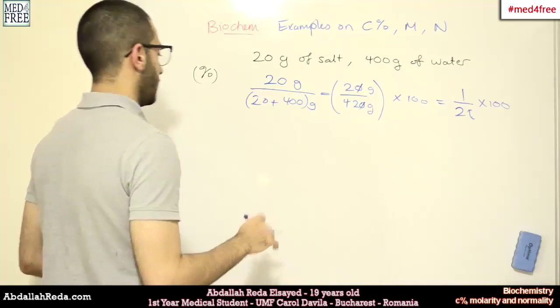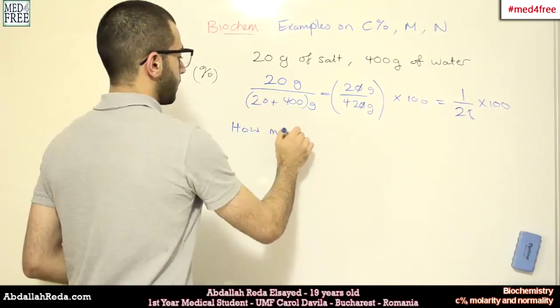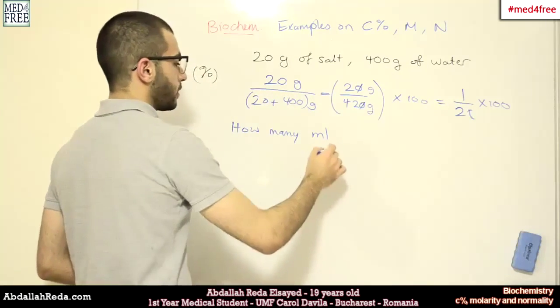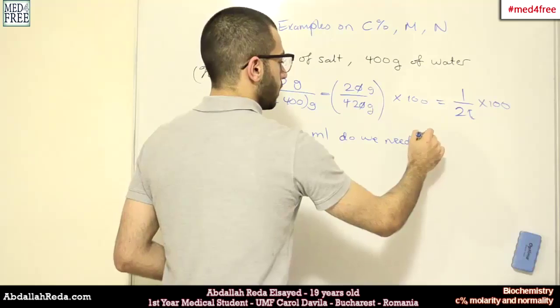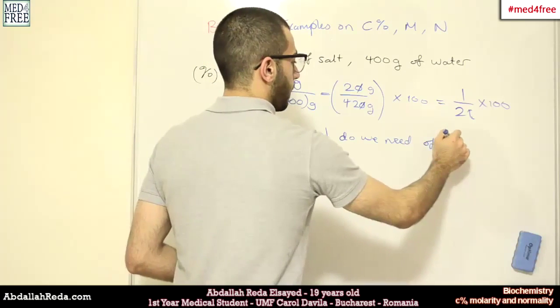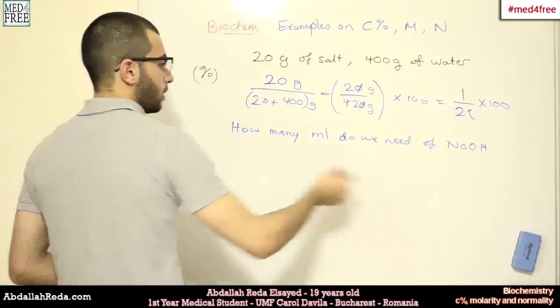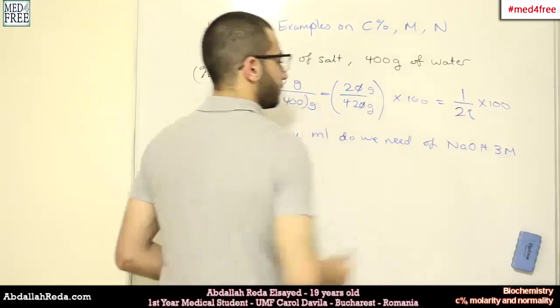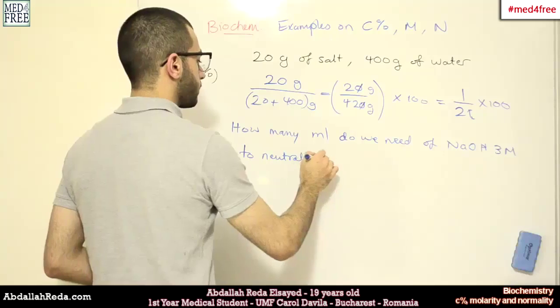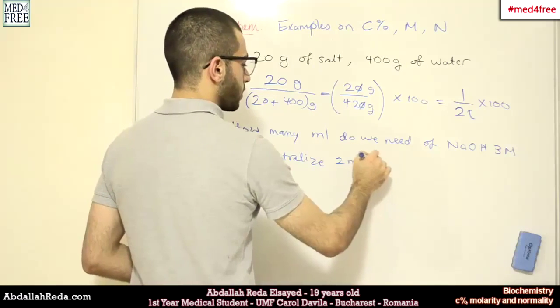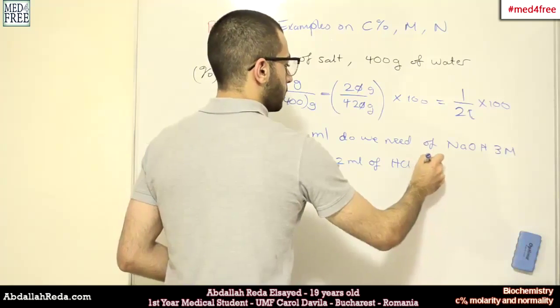For the molarity or the normality, we can get simple questions like, how many milliliters do we need of, for example, sodium hydroxide 3 molar to neutralize 2 milliliters of hydrochloric acid 2 molar.